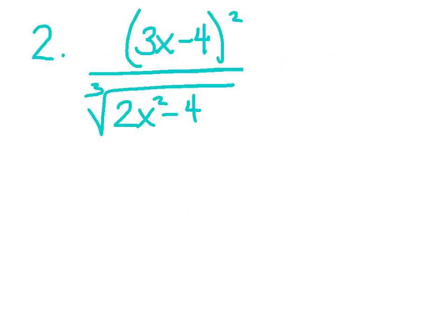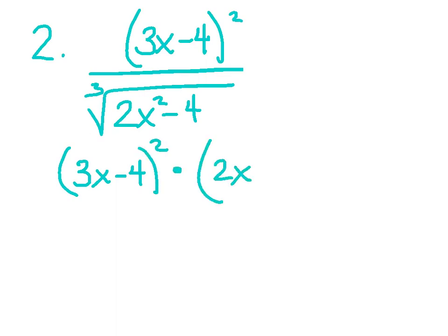Example number 2: the quantity 3x minus 4 squared, divided by the cubed root of 2x squared minus 4. I really try to avoid quotient rule if I can — I'm going to bring the bottom up and do product rule. Rewrite: 3x minus 4 squared, times 2x squared minus 4 to the negative 1 third, since the cubed root means to the 1 third power, made negative when brought up. Go ahead and apply product rule.